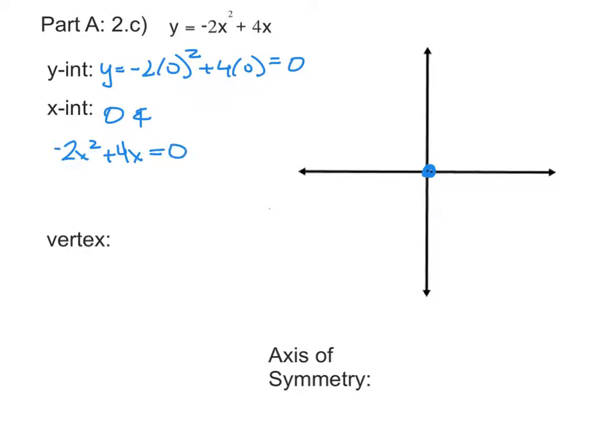Now, the big error I see a lot of people make is they start bringing that 4x to the other side and square rooting, and you just can't do that. It screws it all up. What you have to do is factor. So I'm going to take out the common factor of -2x from each of those terms.